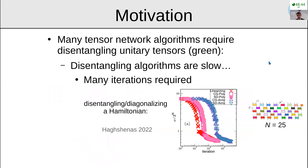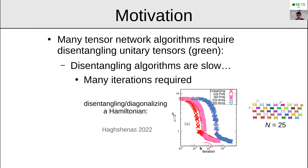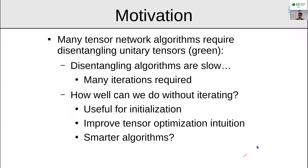Unfortunately, disentangling tensors can be rather challenging in general, especially for a tensor network. Algorithms tend to be rather slow and require many iterations. This was studied in detail in a paper where they tried disentangling a Hamiltonian of 25 qubits using a brick circuit, and they had to go up to tens or hundreds of thousands of iterations.